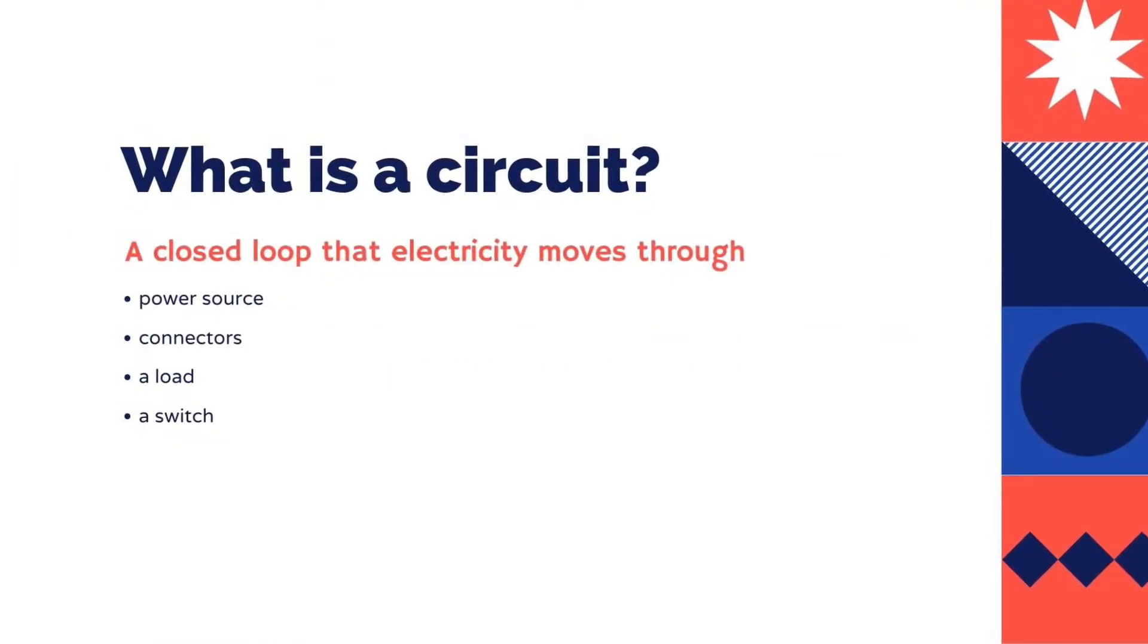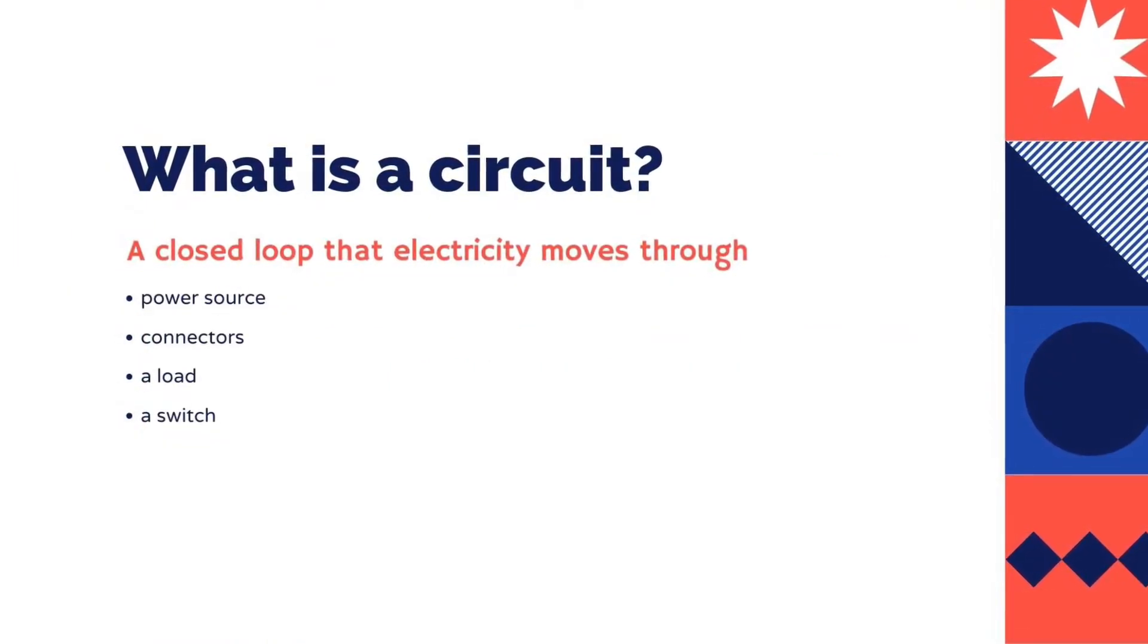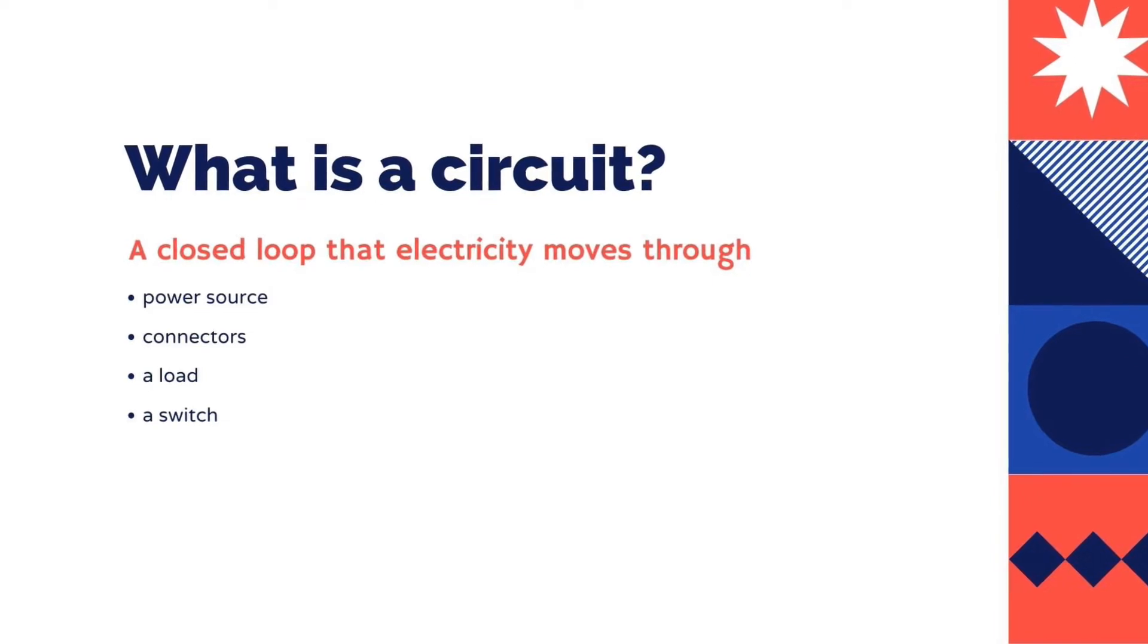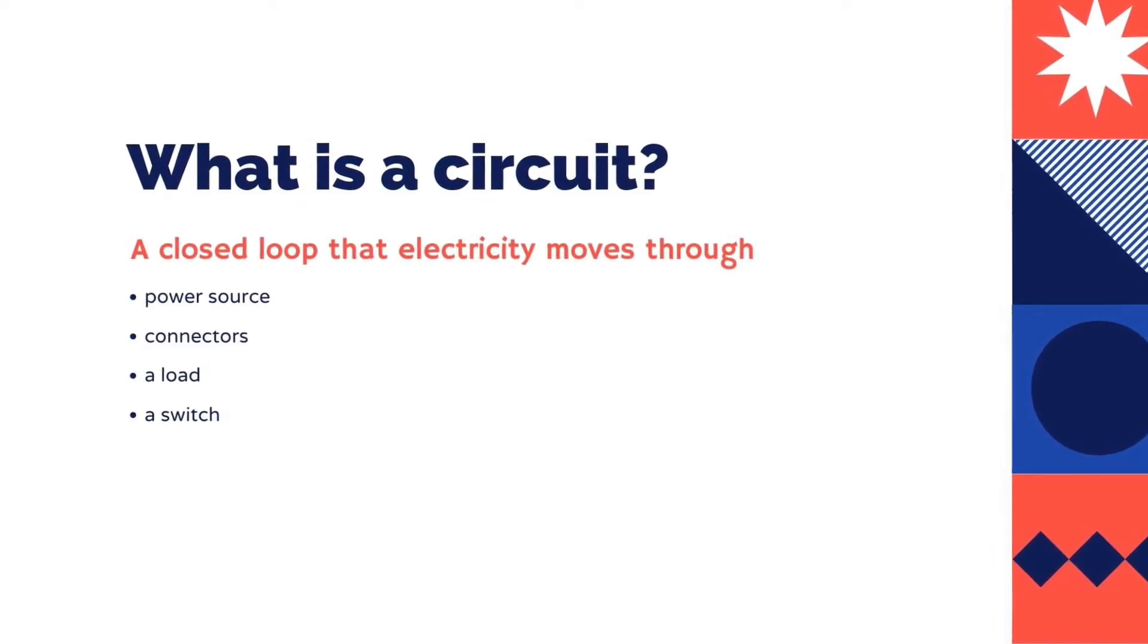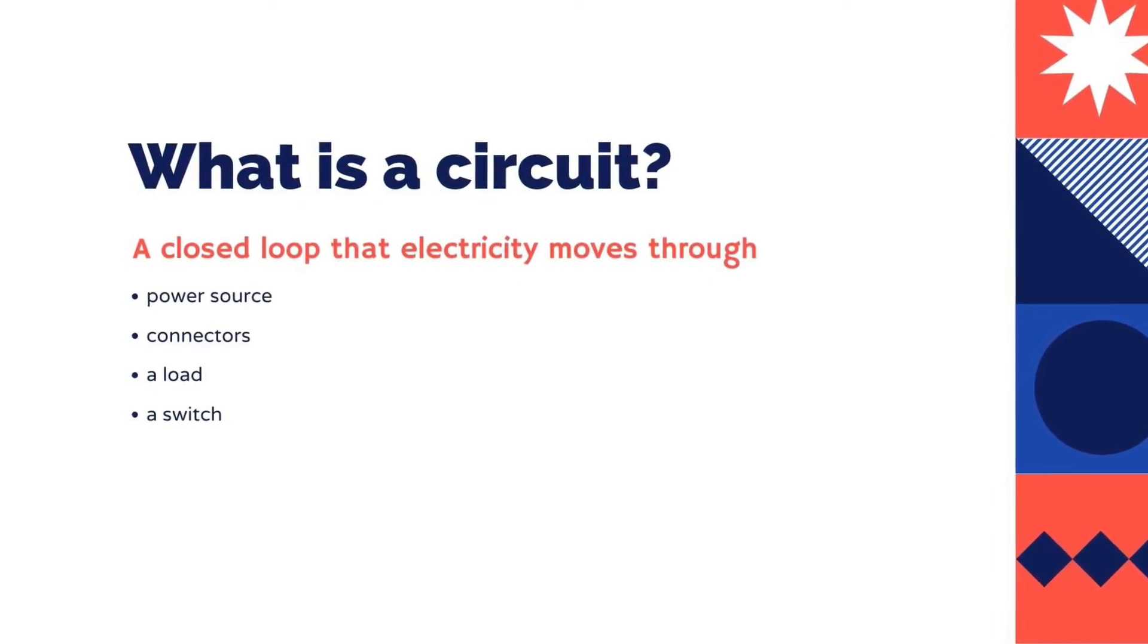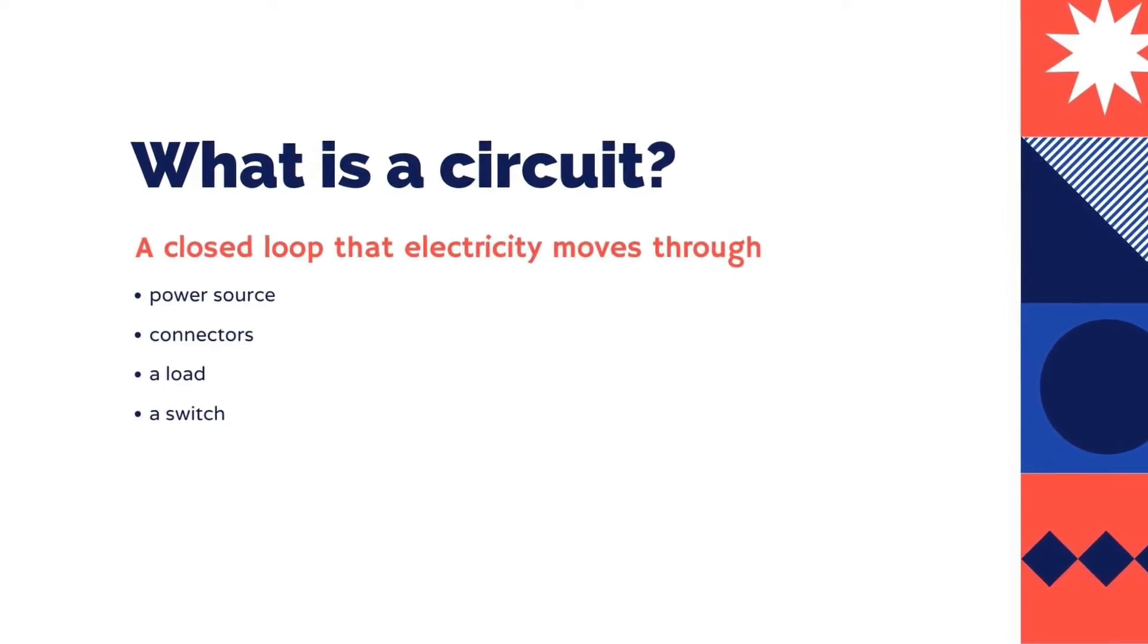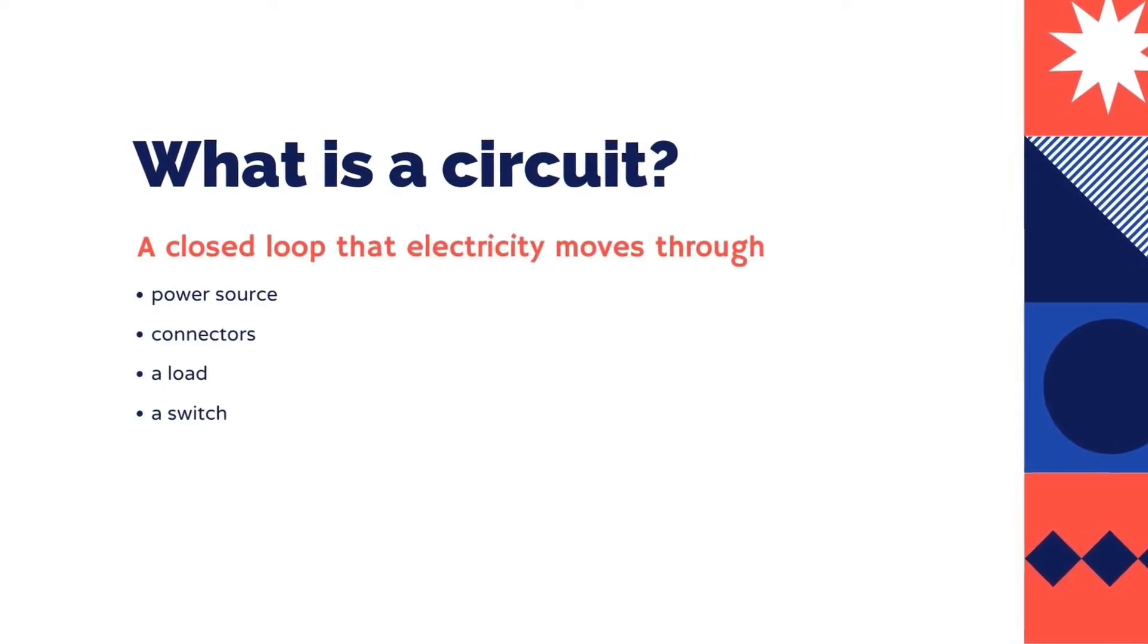What's a circuit? A circuit is a closed loop that electricity flows through. It consists of a power source like a battery or motor, connectors like wires, a load—the thing you want to power like a light bulb or computer—and a switch, on or off.